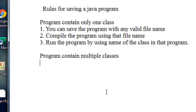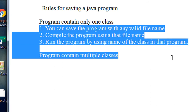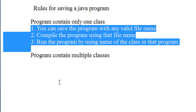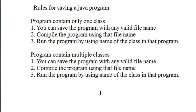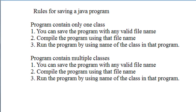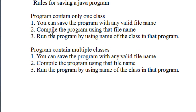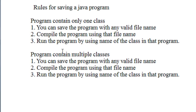Here are the rules. If the program contains multiple classes, you can save the program in any valid file name. So, if there are multiple classes present in a program and none of the classes is public, then you have to follow the same procedure as described in the previous rule — that means a program containing only one class.